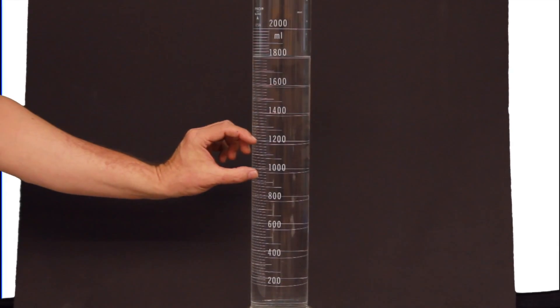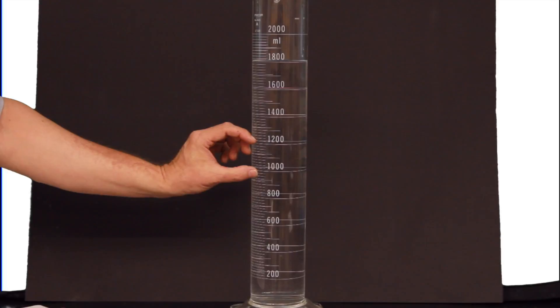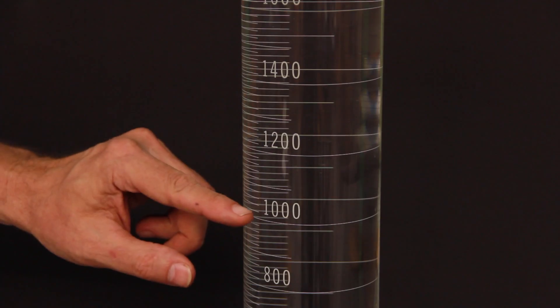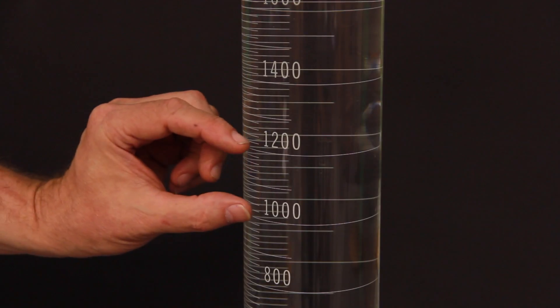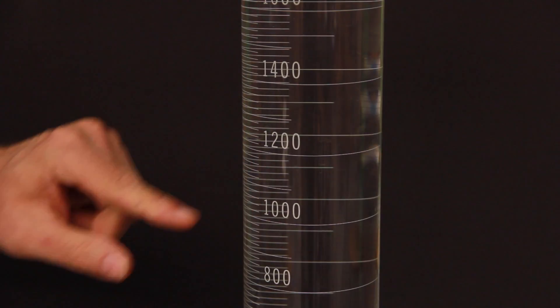In this example, the difference between the two adjacent numbers is 200. Starting at the bottom number, it takes 10 lines to get to the top number. Dividing 200 by 10 gives you an answer of 20 milliliters, which is what each line represents on this cylinder.